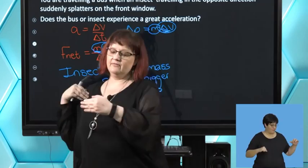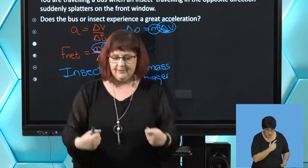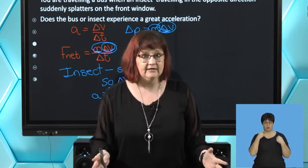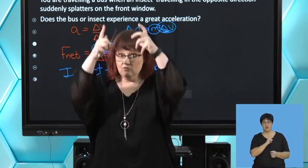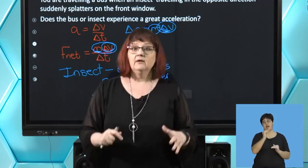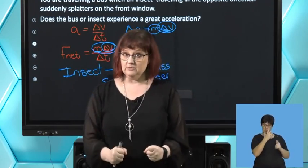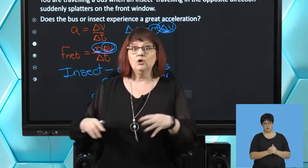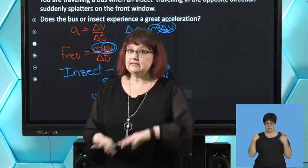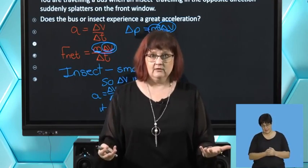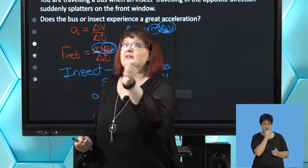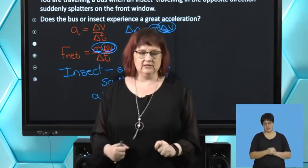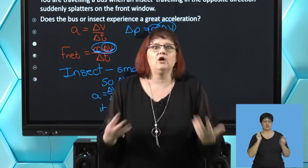The reason the insect splatters is because of its big acceleration. In a car accident between a truck and a car, the people in the car get more damaged not because they experience a bigger force than the truck, but because there's a bigger acceleration — a bigger change in velocity — and that results in injuries. Seat belts and airbags increase the stopping time, and if we make the stopping time bigger, we experience a smaller force. That's why babies must be in car seats — it's a safety thing.